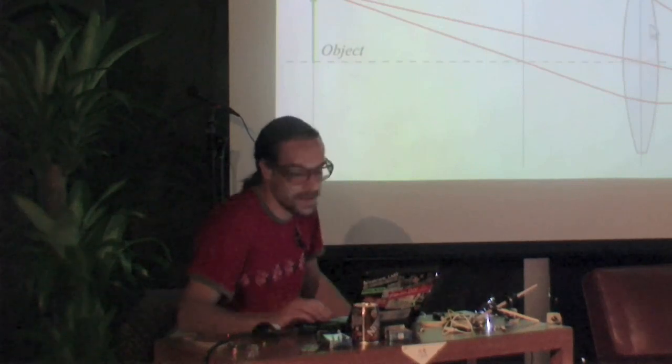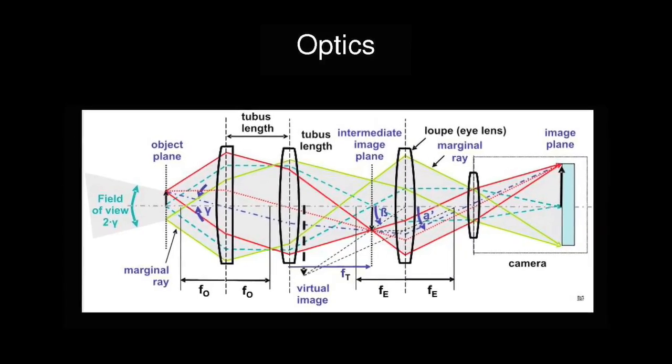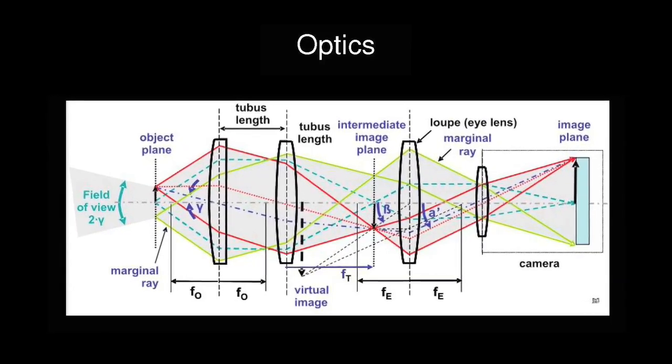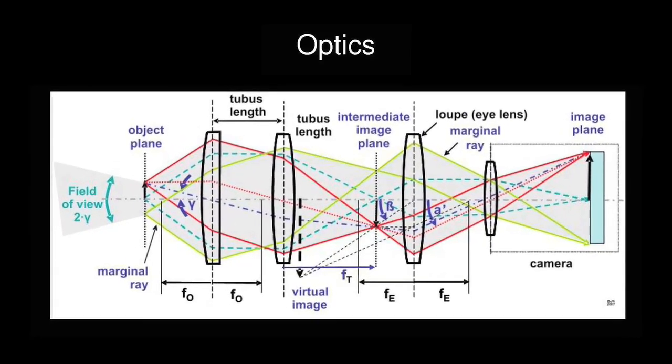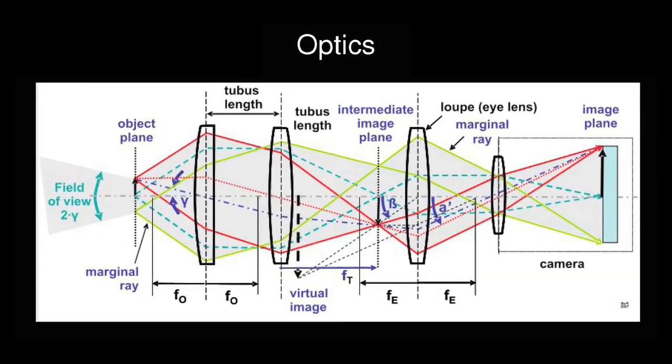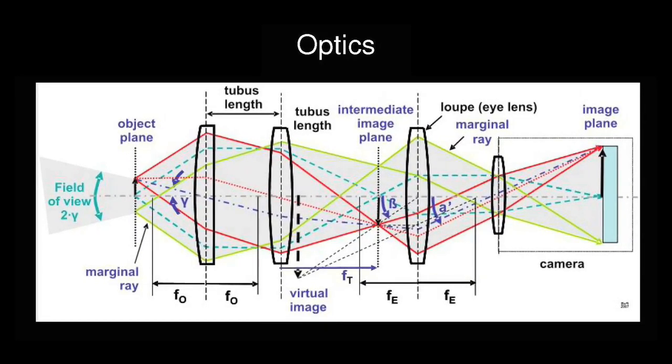Of course, our webcam hasn't got a perfect lens. This is like a real microscopy setup. So it's got many lenses to really improve the corrections of lenses. And also because the different wavelengths, like blue and red, they have a different behavior through the glass. So this is all corrected in a proper microscope. But we don't need that.